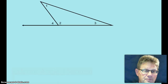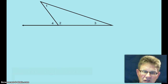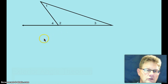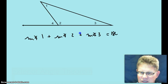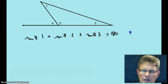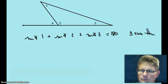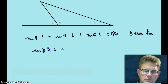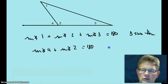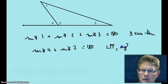Yes, there's another theorem in this section. What was the theorem we just learned? We learned that the measure of angle 1 plus the measure of angle 2 plus the measure of angle 3 equals 180 — that's the Triangle Sum Theorem. And what did we know before by looking at angles 4 and 2? The measure of angle 4 plus the measure of angle 2 equals 180, using the linear pair postulate and the angle addition postulate.